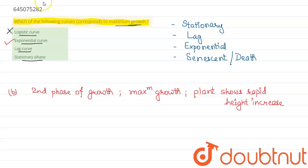Coming to the third option, we have the lag curve. So the lag phase is the first phase of growth. In this, the growth is slowed down but steady.